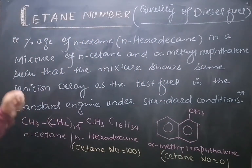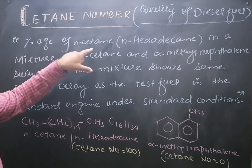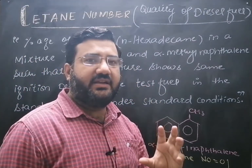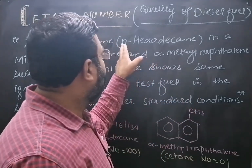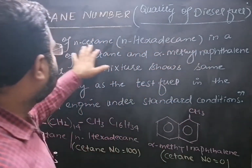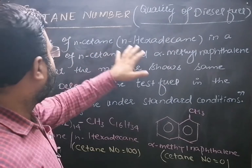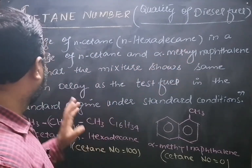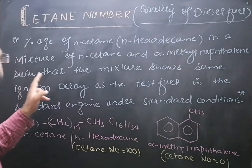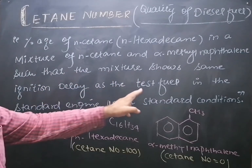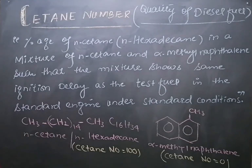Cetane number is defined as the percentage of normal cetane. Normal cetane is basically the common name of normal hexadecane. It is the percentage of normal cetane in a mixture of normal cetane and alpha-methyl naphthalene such that the mixture shows the same ignition delay as the test fuel in the standard engine under standard conditions.